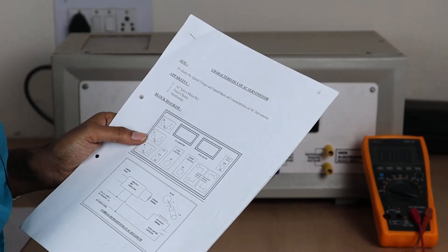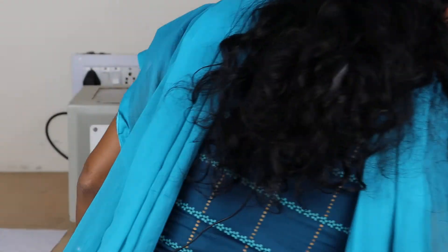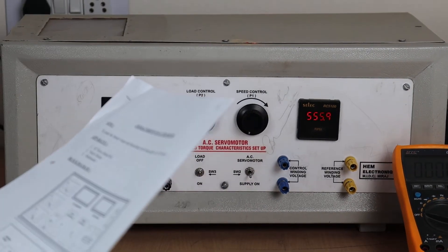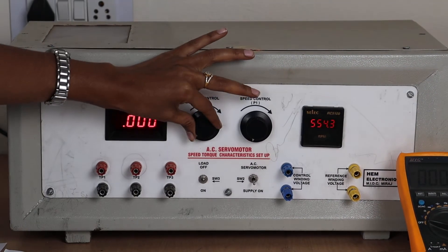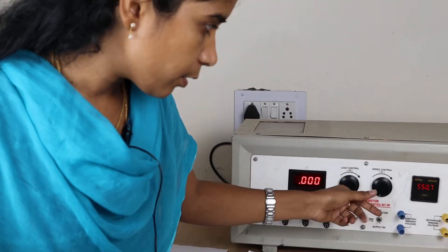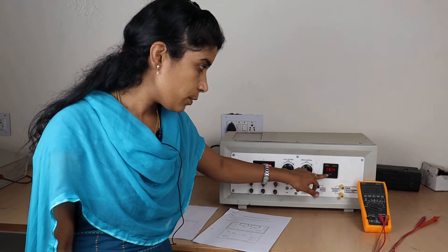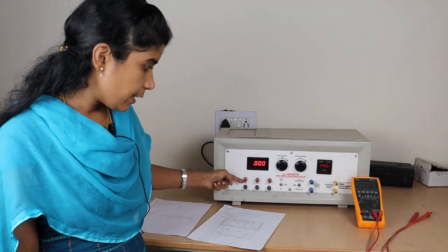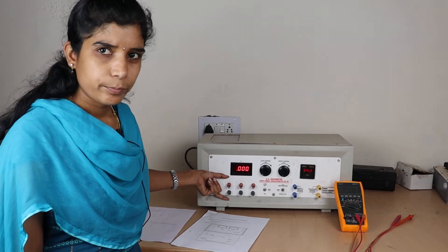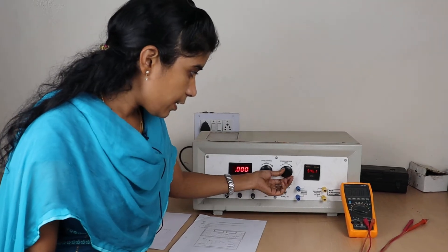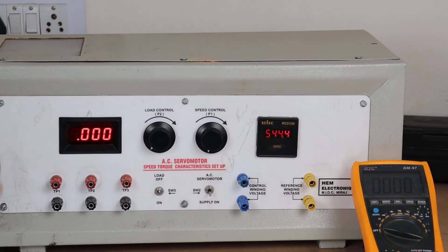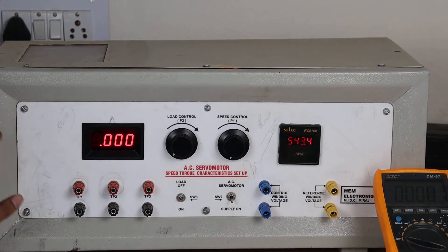So first we will consider speed and back EMF characteristics. For that, coming to the procedure to draw the characteristics between speed and back EMF, without giving any load we have to plot the characteristics. By varying the speed control part P1, we have to take the readings of speed as well as voltage across TP1, TP2, or TP3. Slowly by varying this speed control point P1, note down these two readings and after that plot the graph between speed and voltage, that is back EMF.